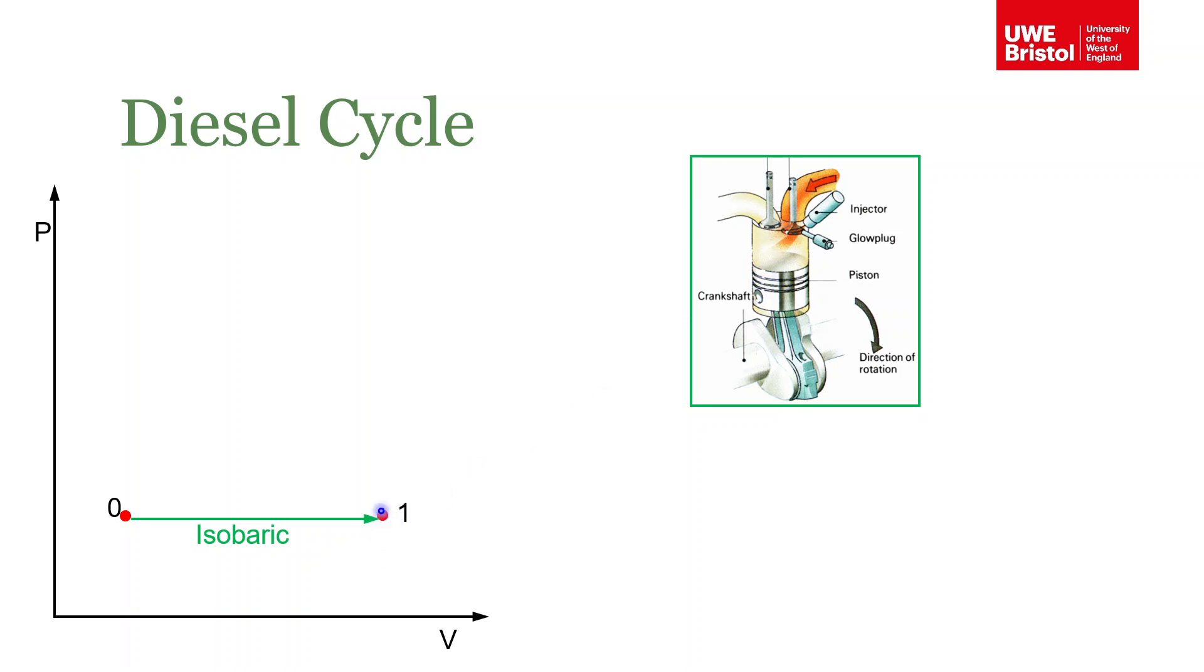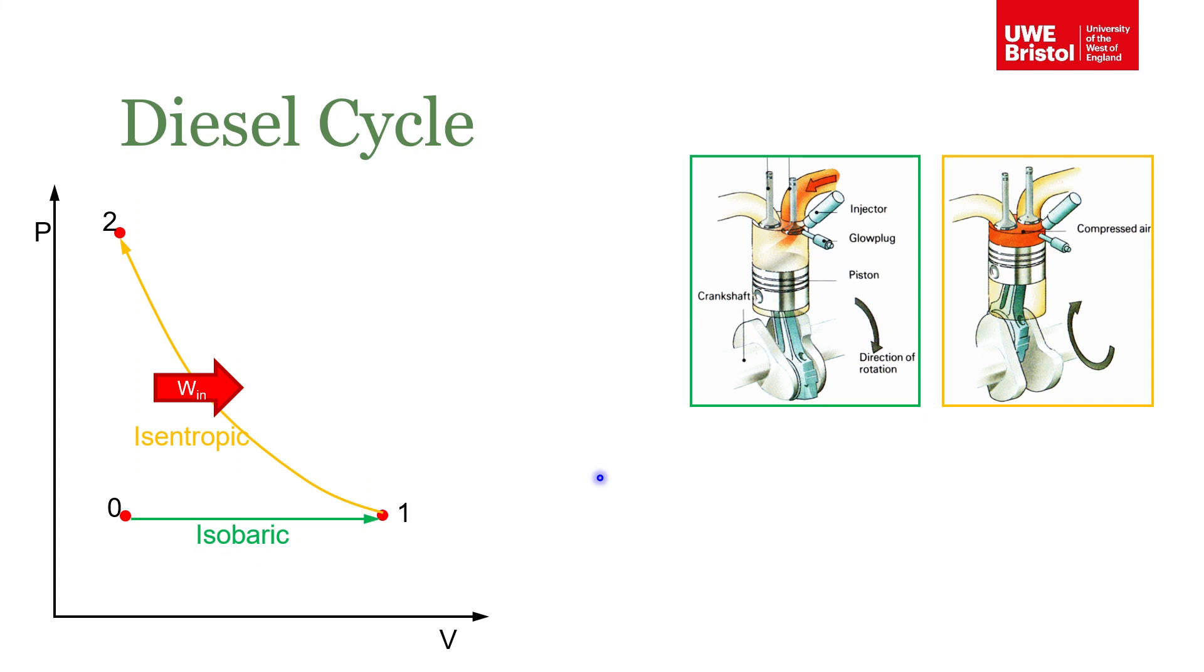In the next stroke, the inlet valve closes, the piston is forced up as the crank rotates, and as the piston moves up it compresses the air inside the cylinder. Both the volume and pressure and temperature increase until we get to state two.